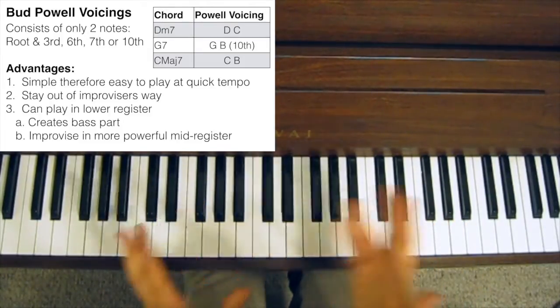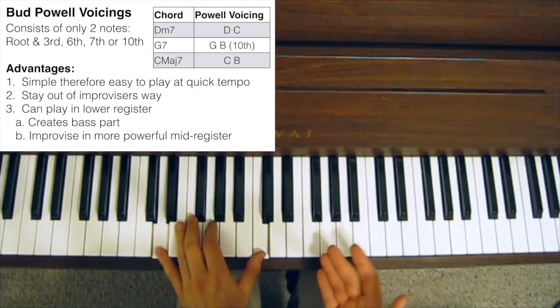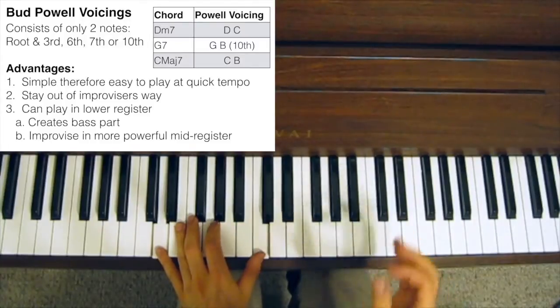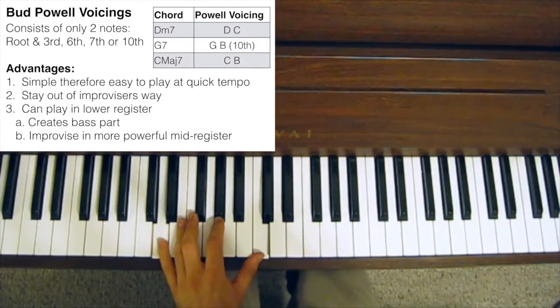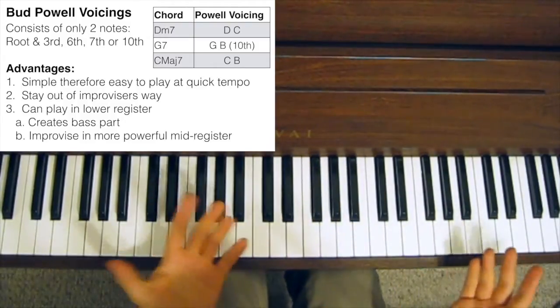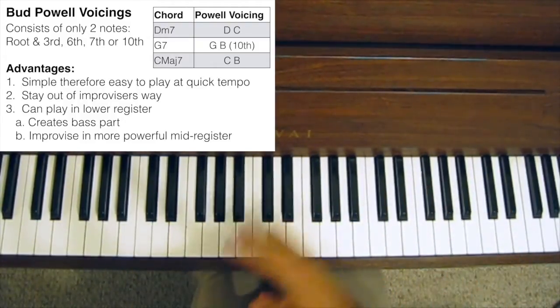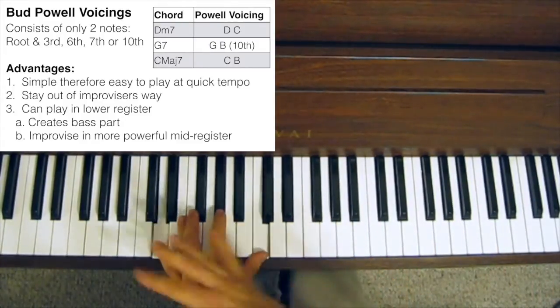Whereas with a Bud Powell style chord voicing, because you're just playing the root and just one other note that's quite strong harmonically, because it's the 3rd, the 6th or the 7th, you're probably not going to get in the way of the soloist. He can essentially do whatever he wants. He can play b-13's or sharp 9's or sharp 11's, do whatever. And he's not really going to clash with anything you're playing.